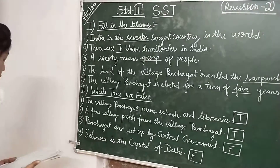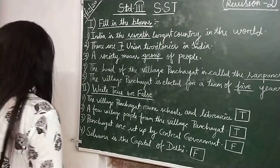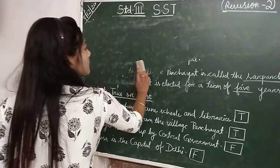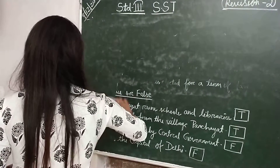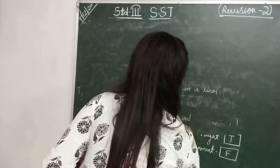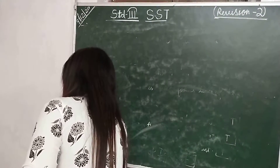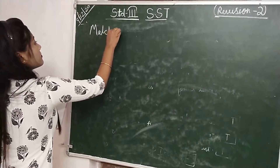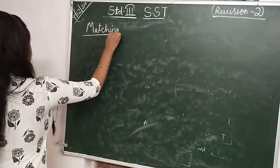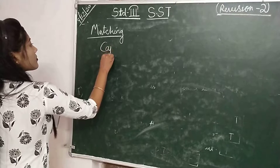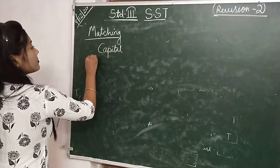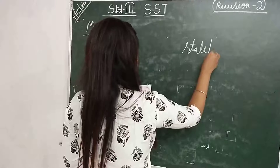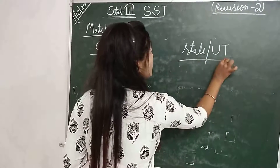Next we will do matching. One side: capital. Another side: State or Union Territories, okay?